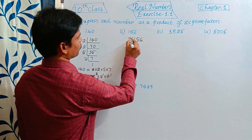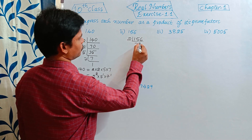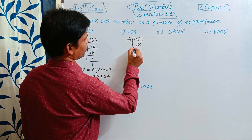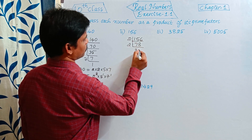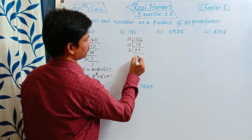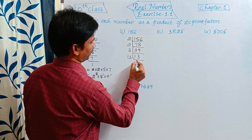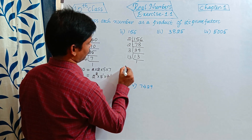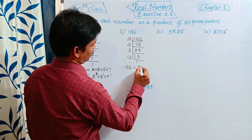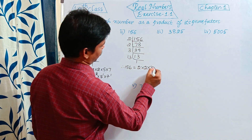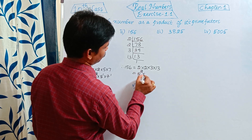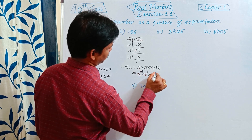The second number is 156. It is divisible by 2: 2 divides 156 giving 78, 2 divides 78 giving 39, then 3 divides 39 giving 13, and 13 divides 13 giving 1. Therefore, 156 is equal to 2 into 2 into 3 into 13, which is 2 squared into 3 power 1 into 13 power 1.